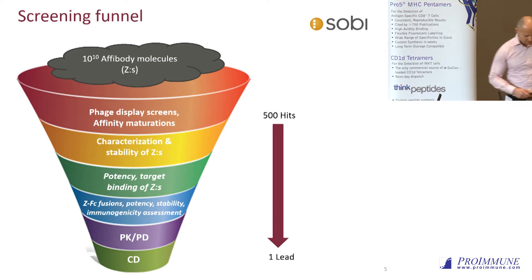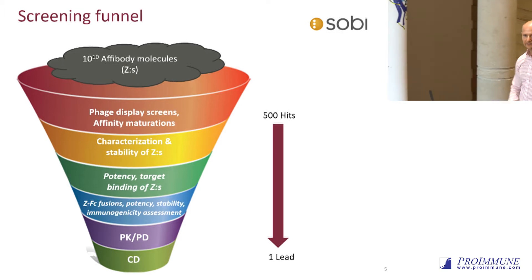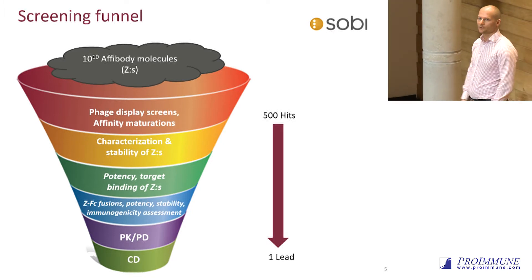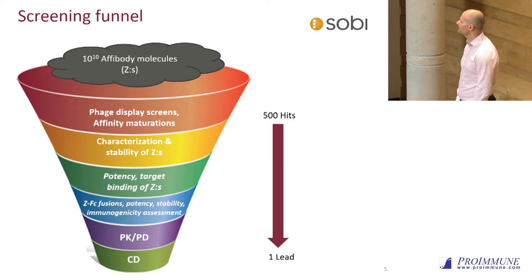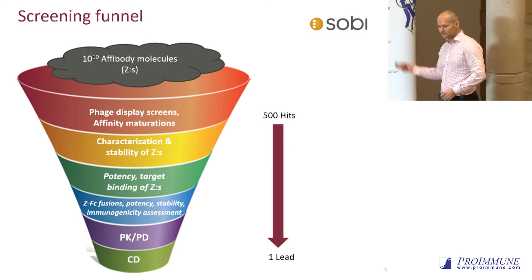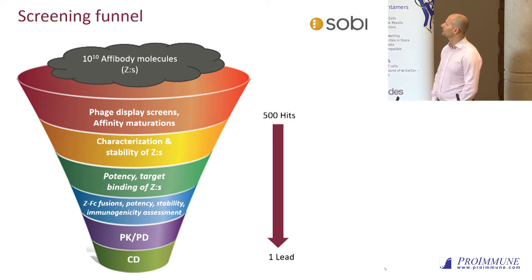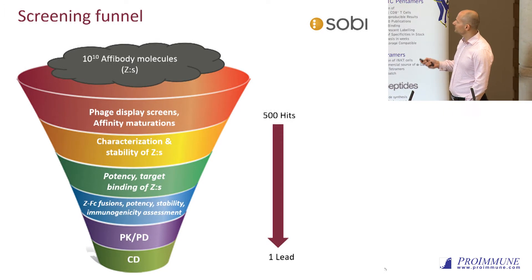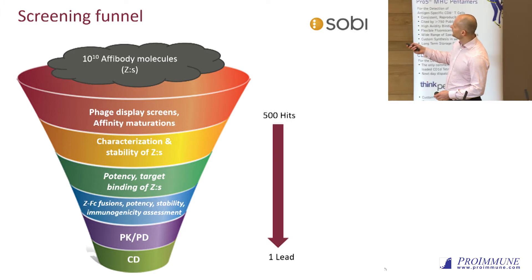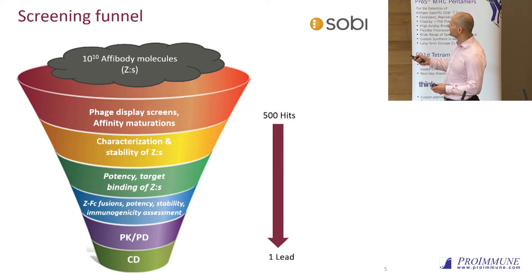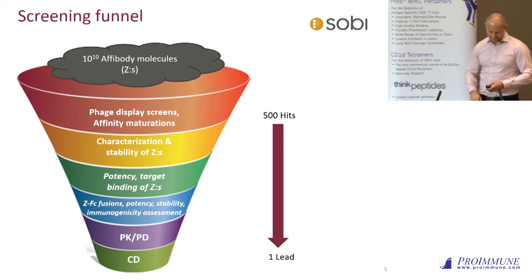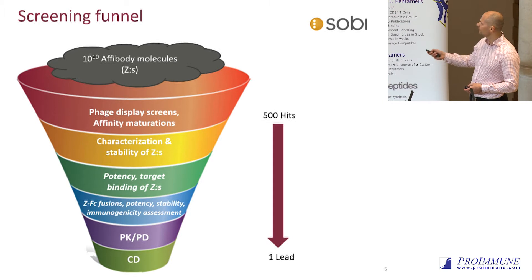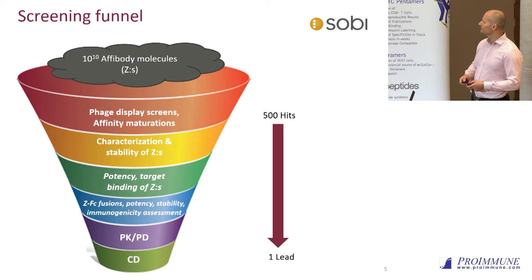This is the screening funnel we use when selecting our candidates. We have billions of molecules going in, then we use phage display screens and several affinity maturations to select our final binders. These are characterized for stabilities and then target potency. Further down, we start looking at immunogenicity, then going to PK/PD studies, and finally we have a candidate.